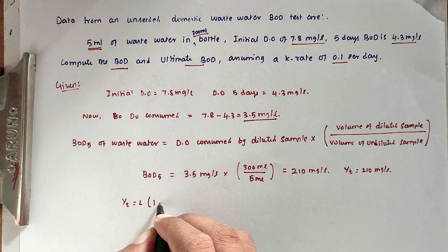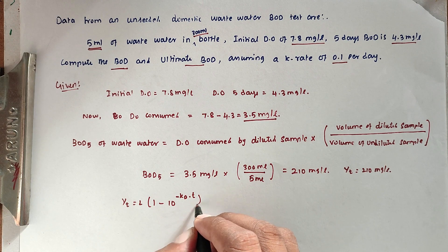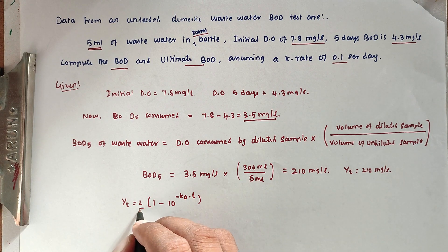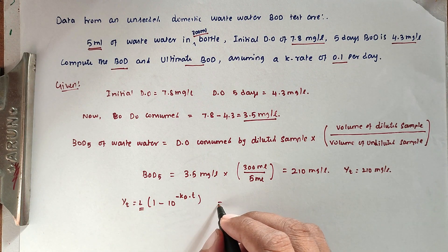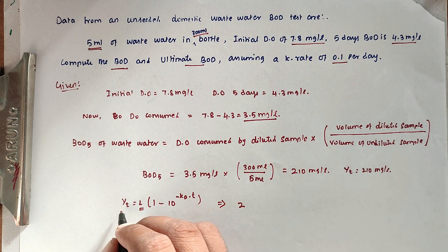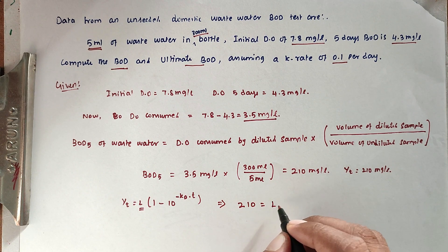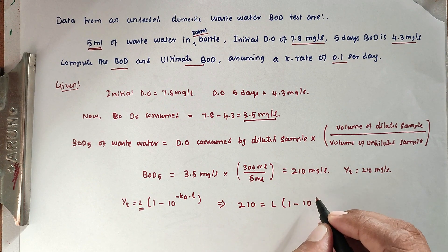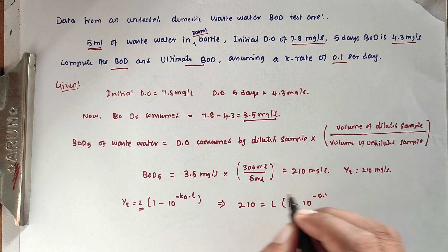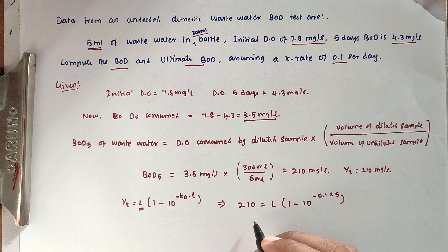Substituting values: 210 = L × (1 - 10^(-0.1×5)). Solving this equation, we get L = 307.1 mg/L.